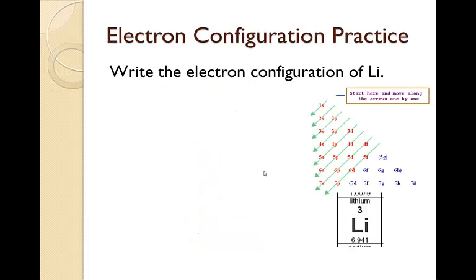So write the electron configuration for lithium. First thing you want to do is look on the periodic table and find the atomic number. The atomic number is three, which means that if it's a neutral atom, there's three electrons. I'm making sure you realize that it's only if it's neutral, because three, the atomic number, don't forget, is the number of protons.